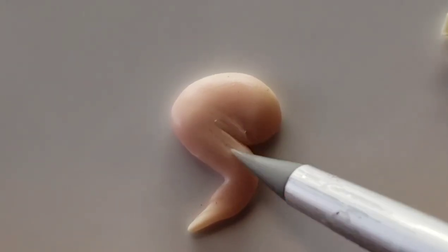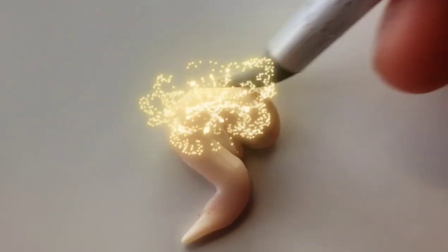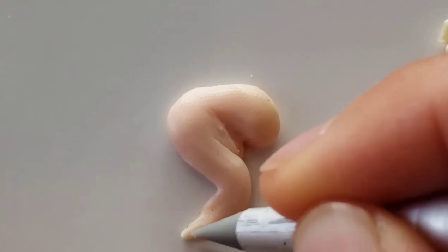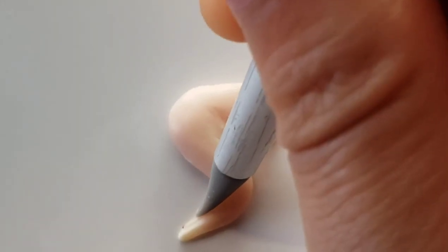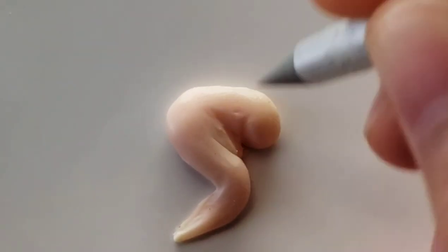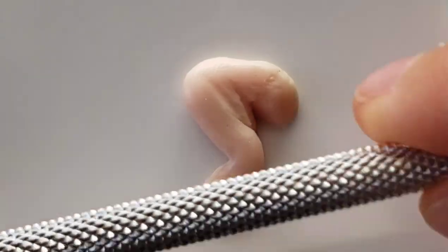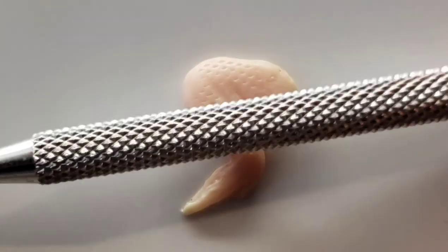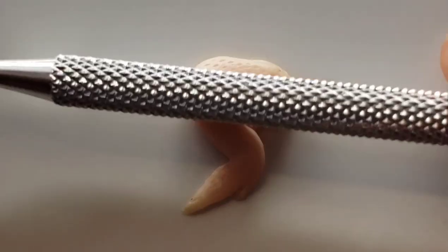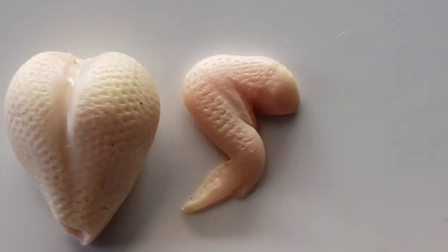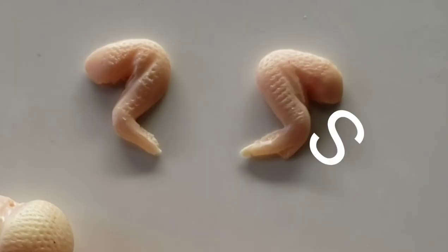Don't worry about it being perfect. Remember wings come in all shapes and sizes so just have fun. And once again I'll use the side of my needle tool to give my wing texture. You'll have to repeat this process again but this time your wing will be in the shape of a Z.